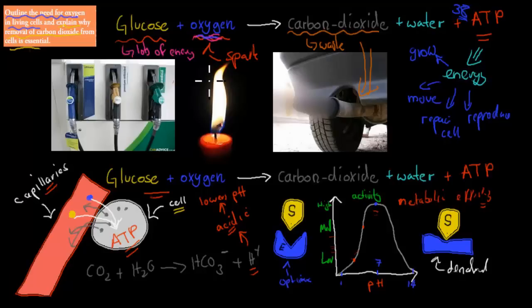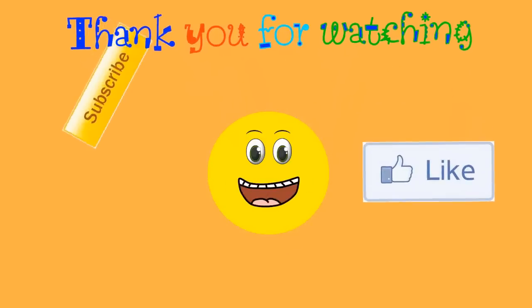So I'll go over again. We need oxygen to produce energy. And we need energy to grow, move, repair cells, and reproduce. So basically to stay alive. And we need to get rid of carbon dioxide to make sure that our pH doesn't become too low because it lowers our blood pH and our cell pH. So it lowers blood and cell pH. And when that happens, our enzymes become denatured. And that means they work less efficiently. And if that happens, that means all of our most important reactions stop working as fast as they could. So hopefully that was useful. Thank you for watching.